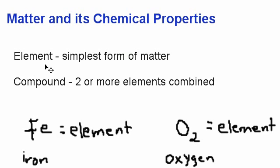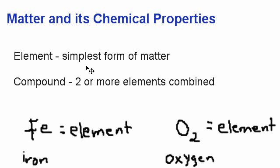If you've ever looked at a periodic table — if you haven't, I suggest you open your chemistry book or go online and search for a periodic table. You're going to see little boxes on the periodic table and those boxes contain symbols. For example, the symbol Fe stands for iron, and O stands for oxygen on the right-hand side. The periodic table is built of elements, and elements are the simplest forms of matter.